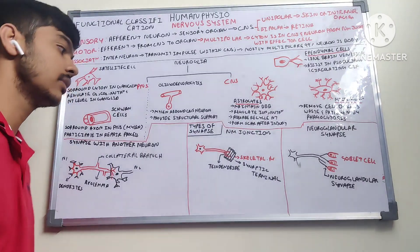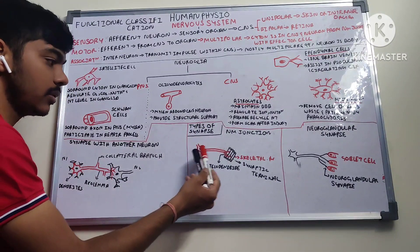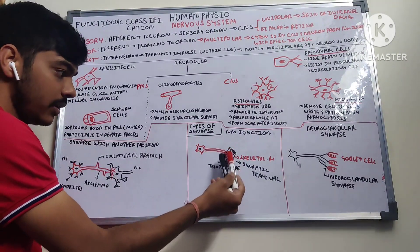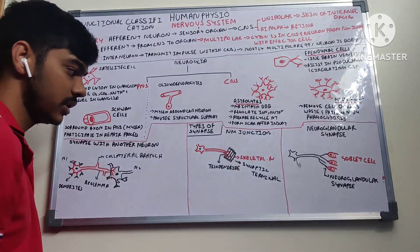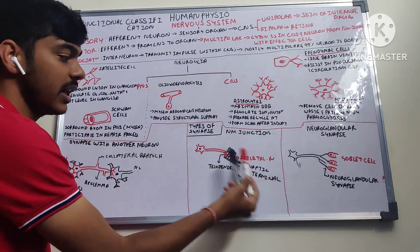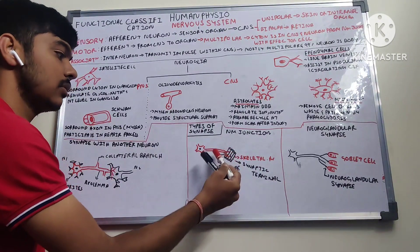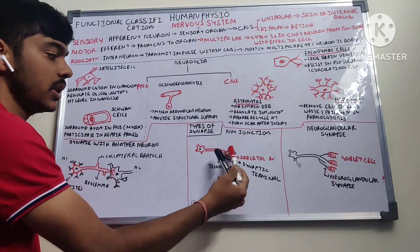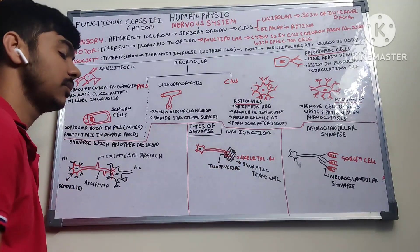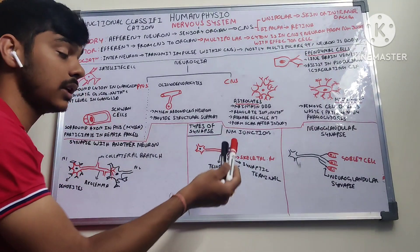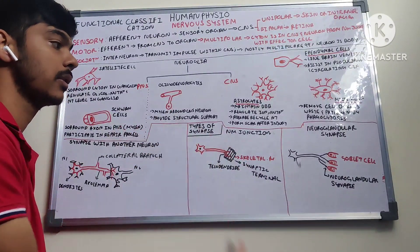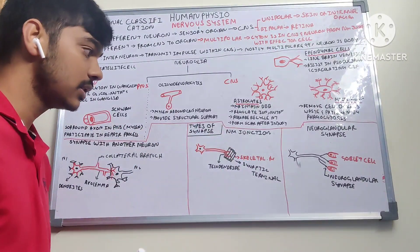A neuromuscular junction is a neuron-muscle synapse. The telodendrite forms a synaptic terminal with the skeletal muscle. Acetylcholine is released here, giving the stimulation for whether the muscle has to contract or relax based on whether acetylcholine is coming in or going out.